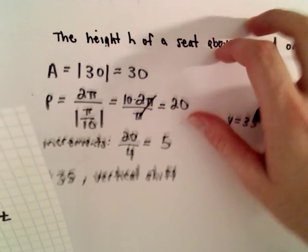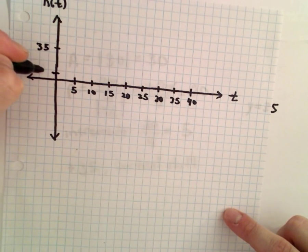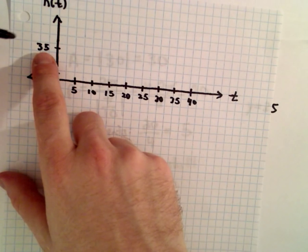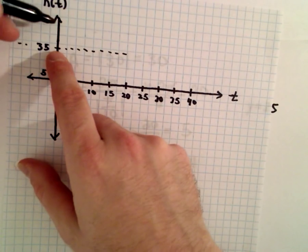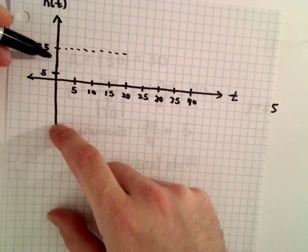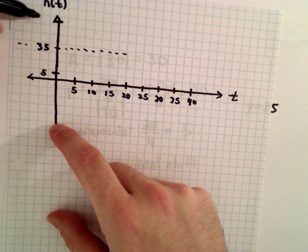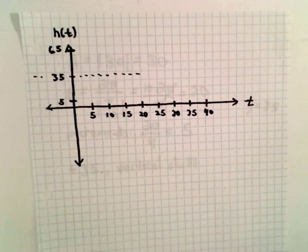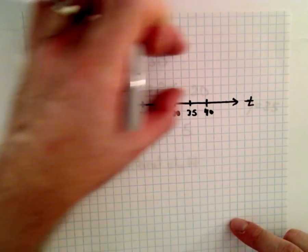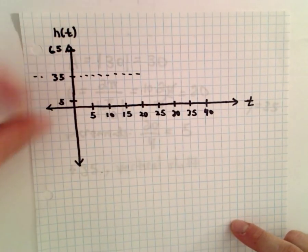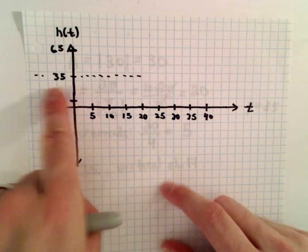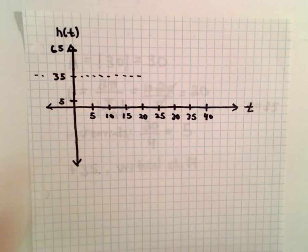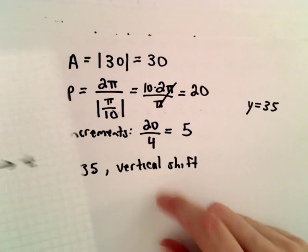From that midline, if you think about the amplitude of 30 — if you go 30 units down from 35 you'll be at 5, and if you go up 30 units from the midline y = 35 you'll be at 65. So my sine function is going to be trapped between those bounds: it'll bottom out at 5 and top out at 65. I like to think about it this way because it gives me symmetry — I go above and below the midline by equal amounts.